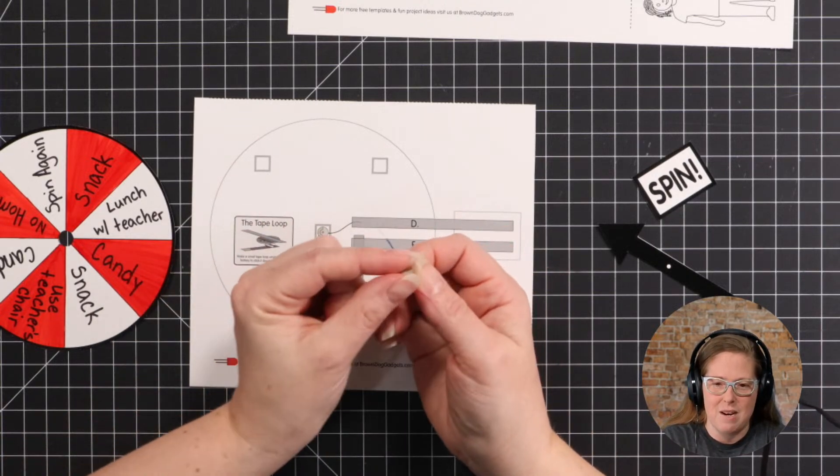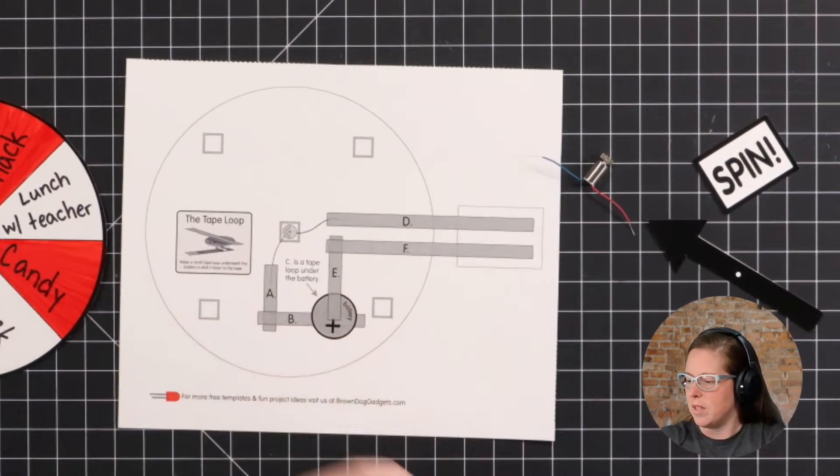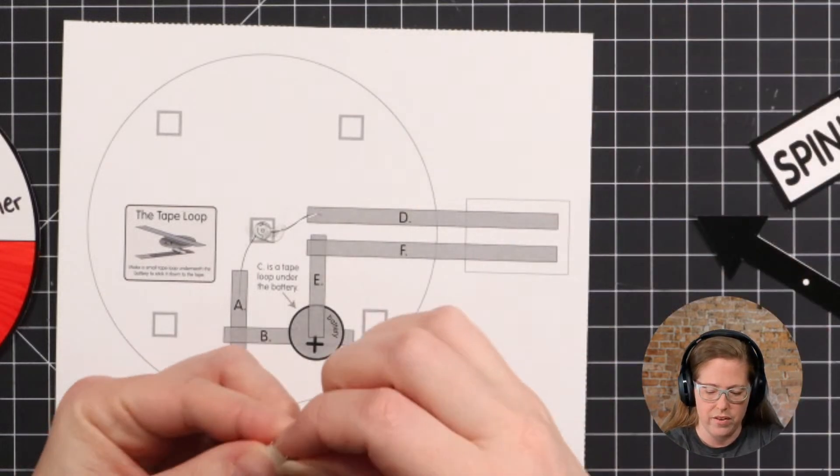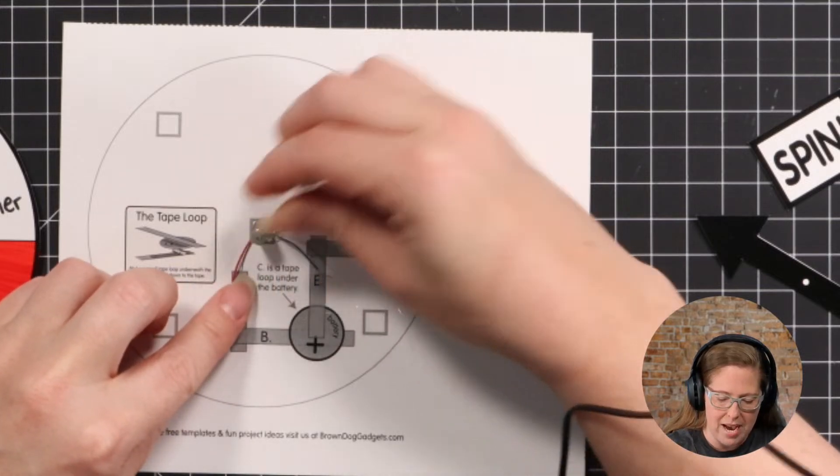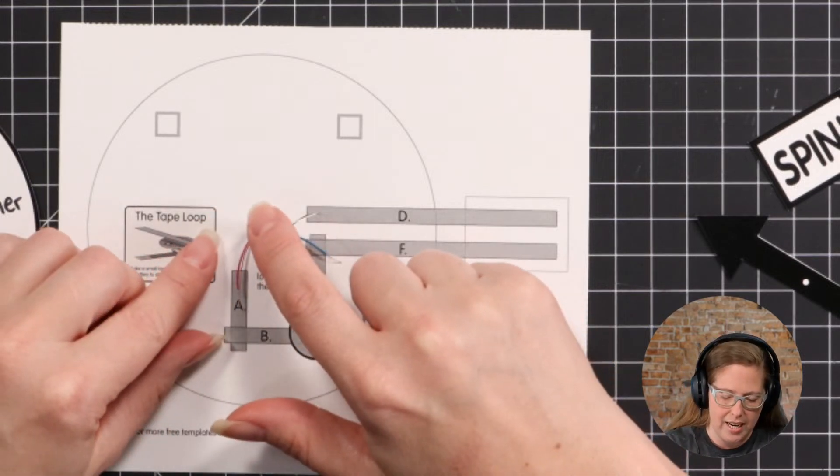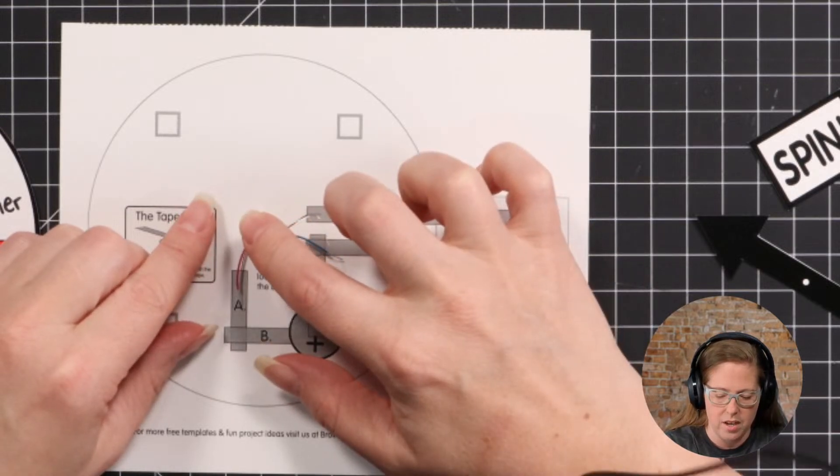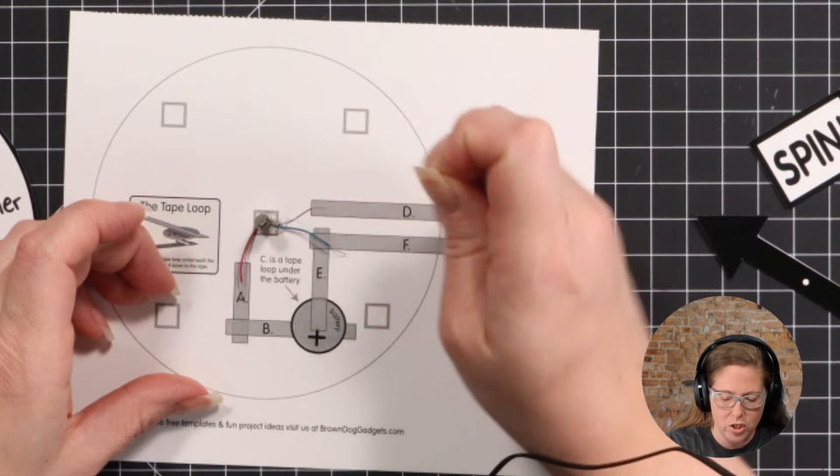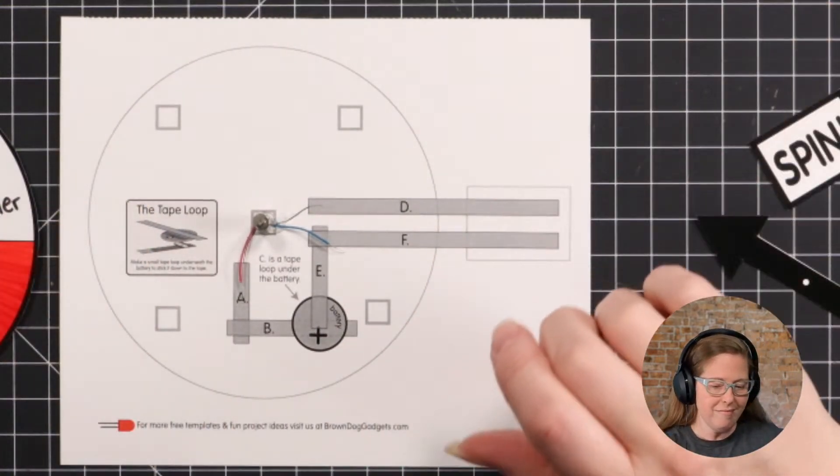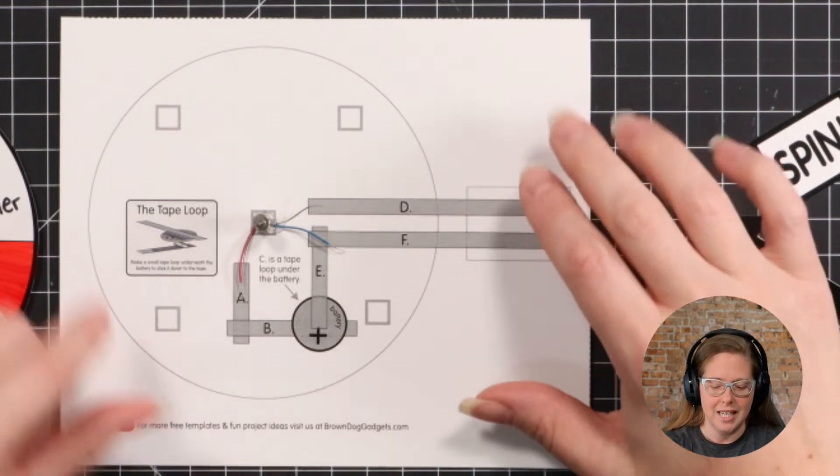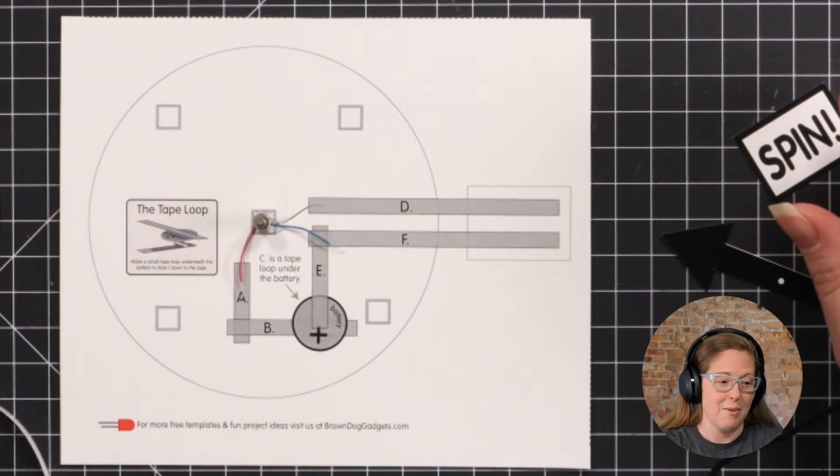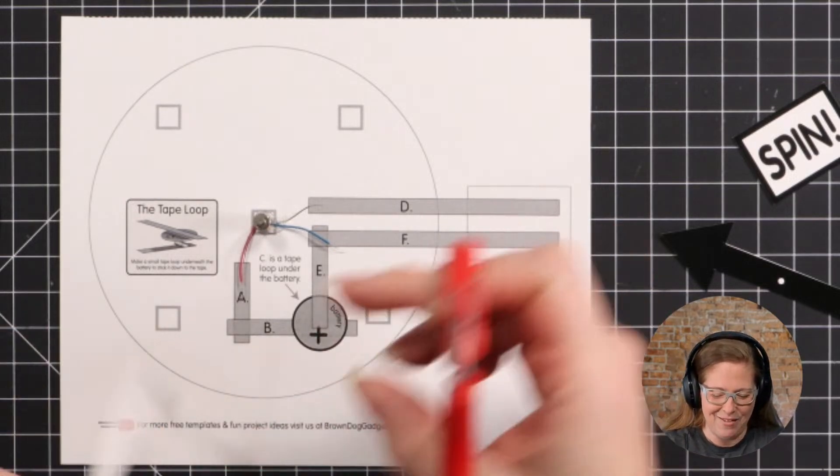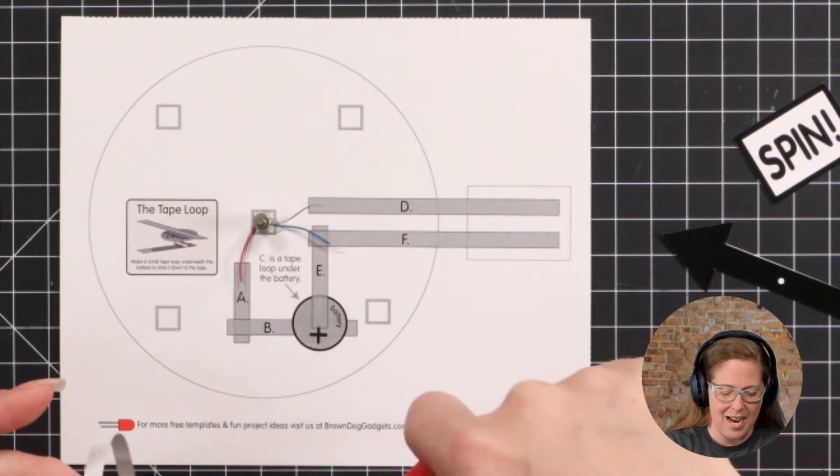I'm going to affix the bottom of it, right where those wires are, right down inside that square there. I'm going to use a little bit of hot glue. I've got my motor hot glued down to the template.